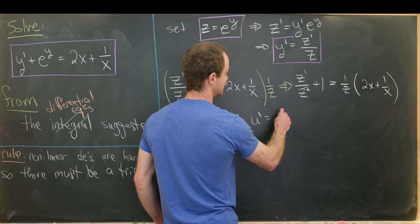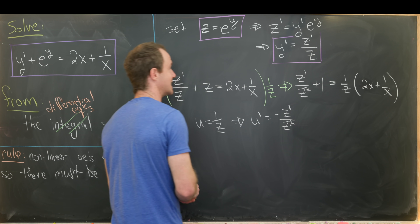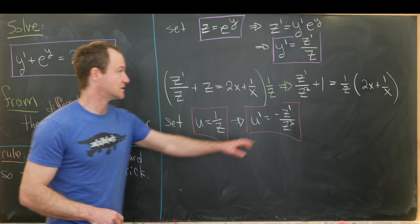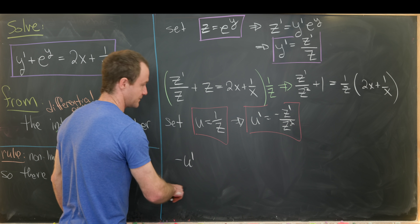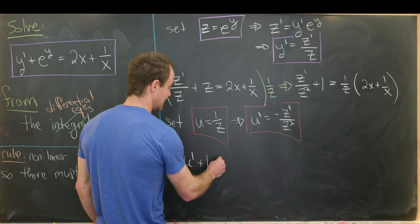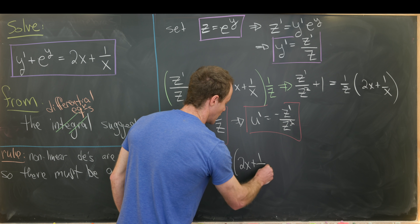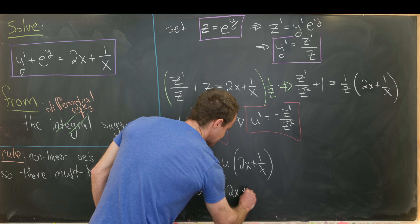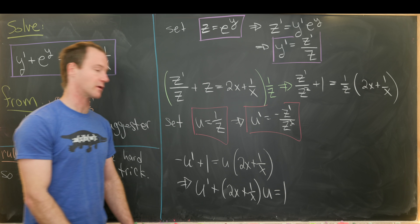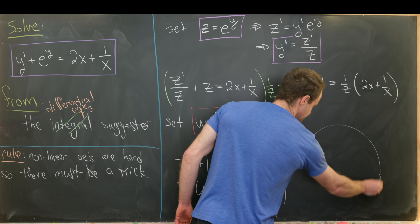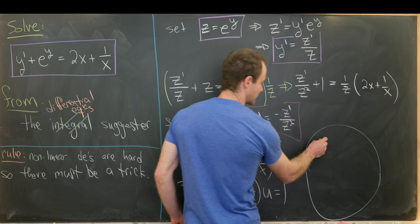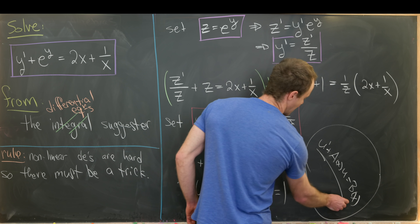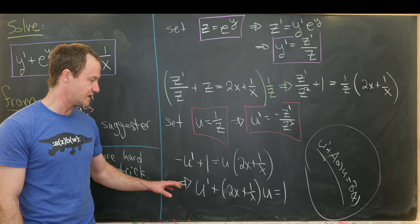With u equal to 1 over z, the chain rule gives u prime equal to minus z prime over z squared. Substituting, z prime over z squared becomes minus u prime, so we have minus u prime plus 1 equals u times (2x plus 1 over x). Rearranging gives u prime plus (2x plus 1 over x) times u equals 1, which is a first order linear differential equation in the standard form u prime plus a(x) times u equals b(x).